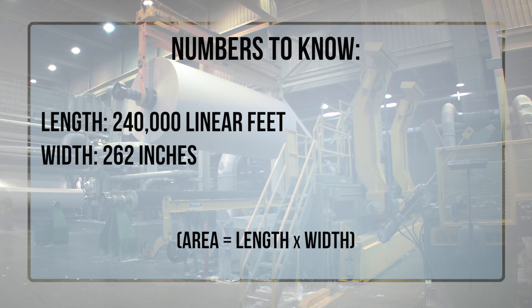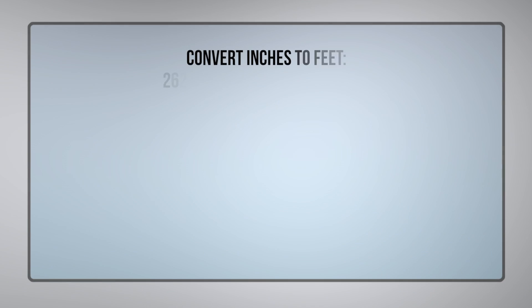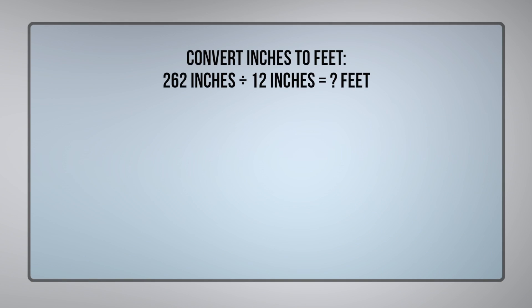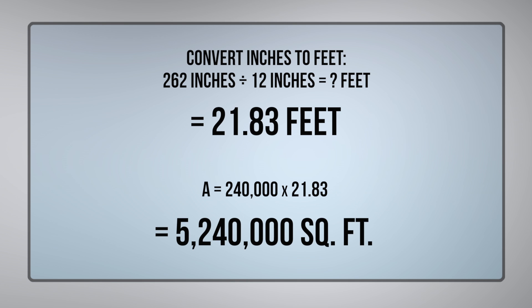How many square feet of paper are on each parent roll? To calculate the square footage we need to multiply the width by the length of paper. First we need to convert the width from inches into feet, so we divide 262 inches by 12 inches, which gives us 21.83 feet. Now we can multiply 21.83 feet by 240,000 feet, which totals 5,240,000 square feet of tissue on each parent roll.